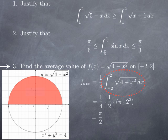Graphically, what that means is that the rectangle with one side of length 4 and the other of length π/2 is going to have the same area as the area under the graph of the function over [−2, 2].